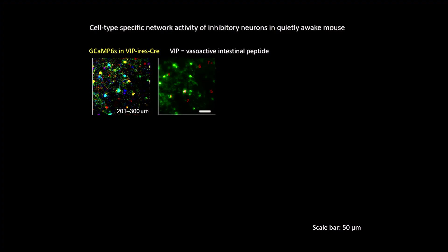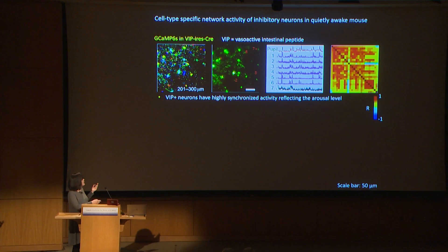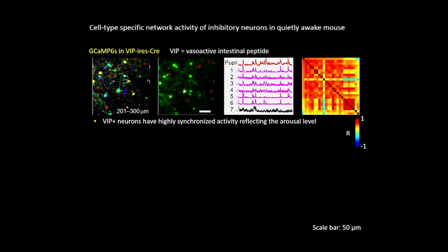For those interested in interneurons, there are many subtypes. We labeled a particular subtype called VIP neurons, and with the Bessel approach we gathered all those VIP neurons in one imaging session. We found that those neurons are highly synchronized, and furthermore their activity is very strongly correlated with the diameter of the mouse's pupil. Since pupil dilation indicates arousal and attention, we discovered that VIP neurons as a population have extremely synchronized activity reflecting the animal's arousal level.